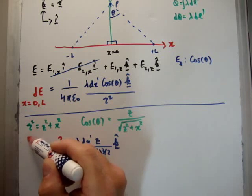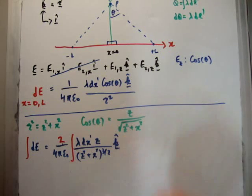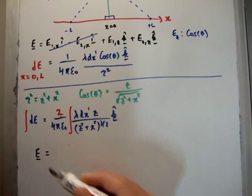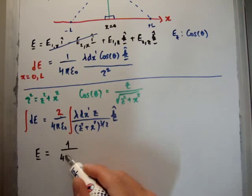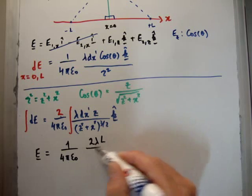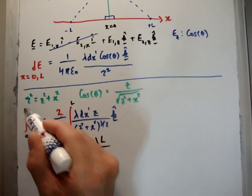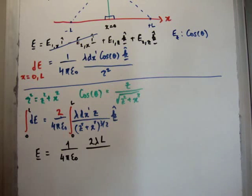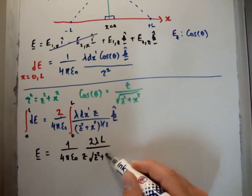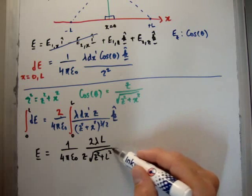To get the total electric field we integrate with respect to dx prime. This is not an easy integral so I'm just going to give you the answer: E = (1 / 4π ε₀) × 2λL × z / sqrt(z² + L²). That is the electric field due to a wire.